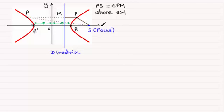This will become our x-axis and let's say the directrix cuts the x-axis at this point D here. I'm going to let the distance O to D be L.